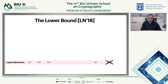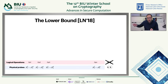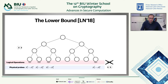The lower bound of Larsen and Nielsen is based on the information transport technique of Patrascu and Demaine, in the cell probe model of Yao from 1981, which says computation is free — you only pay for probes, for actually accessing memory. We build a complete binary tree above all logical operations, where the leaves are the actual logical operations. We assign physical probes to internal nodes of that tree.